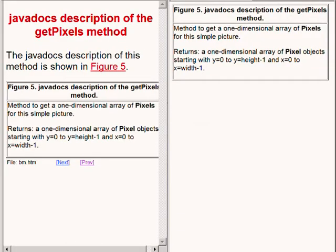The documentation for the method named getPixels is shown in figure 5 on the right hand side of your screen. According to Erickson this is a method to get a one dimensional array of pixels for this simple picture.